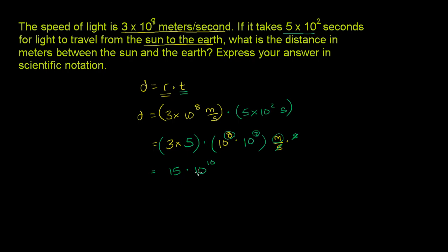Now, you might be tempted to say that we're done, that we have this in scientific notation. But remember, in scientific notation, this number here has to be greater than or equal to 1 and less than 10. This clearly is not less than 10. So how do we rewrite this? We can write 15 as 1.5. This clearly is greater than 1 and less than 10. And to get from 1.5 to 15, you have to multiply by 10.